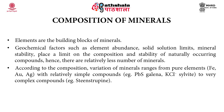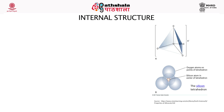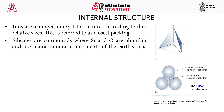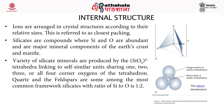According to the composition, variation of minerals ranges from pure elements such as iron, gold and silver, with relatively simple compounds like galena and sylvite, to a very complex compound such as steenstrupine. Ions are arranged in crystal structures according to their relative sizes, referred to as closest packing. Silicates are compounds where silicon and oxygen are abundant and are the major mineral components of the earth's crust and mantle. A variety of silicate minerals are produced by the silicon tetrahedron linking to self-similar units, sharing one, two, three or all four corner oxygens of the tetrahedron. Quartz and feldspar are among the most common framework silicates, with a ratio of silicon to oxygen of 1 to 2.